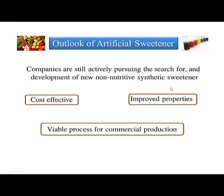Broadly, whenever you evaluate a molecule as an artificial sweetener, certain properties are needed: it should be cost-effective, have improved properties in terms of less toxicity, no side effects, and easy metabolism. It should also have a viable process for commercial production, as we saw with aspartame, saccharin, and cyclamates. Easy reactions, easy synthesis, cost-effective methods, and better properties are what people look for — and this is still a burgeoning area with many researchers working to find new molecules with better sweetness properties.